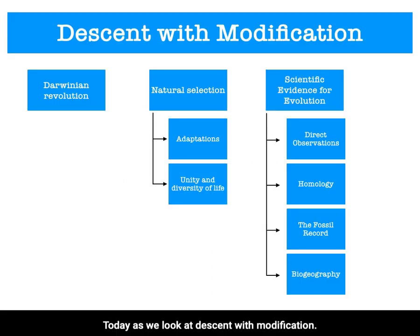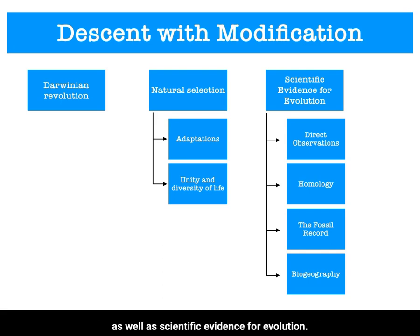Today as we look at descent with modification, we're going to cover the Darwinian revolution, natural selection, as well as scientific evidence for evolution.